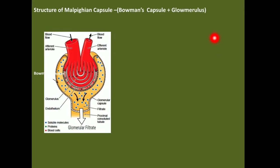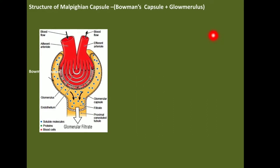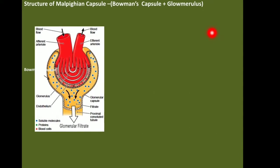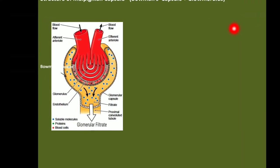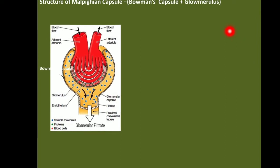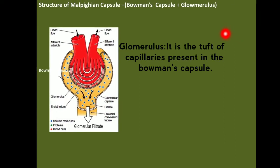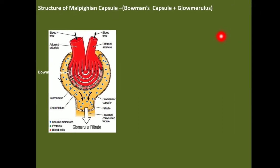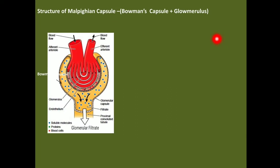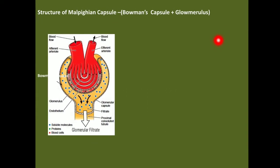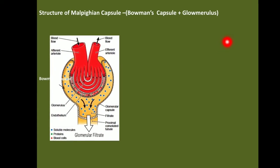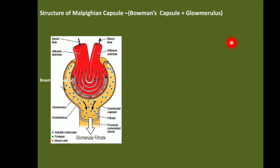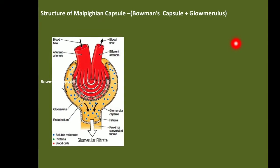The Malpighian capsule is the main filtering unit of the nephron. It consists of a cup-shaped structure called the Bowman's capsule, which leads to the PCT. The tuft of blood vessels present inside the Bowman's capsule is called the glomerulus, formed by the afferent and efferent arteriole. The afferent arteriole has a larger diameter than the efferent arteriole, which leads to what we call ultrafiltration.